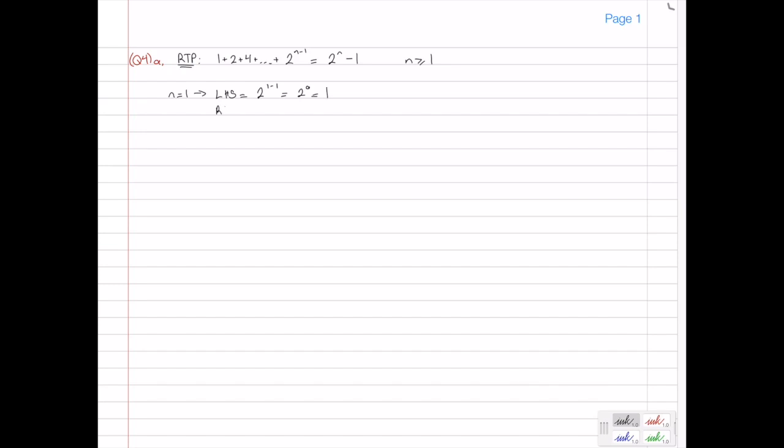And the right hand side is going to be 2 to the power of 1 minus 1, which is 2 minus 1, which is 1. Okay, so that's equal to the left hand side. So right hand side equals left hand side. So therefore, our base case is true. True for n equals 1. So that's the base case done.